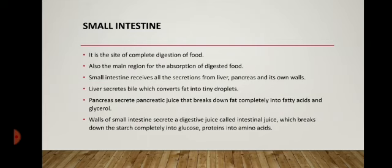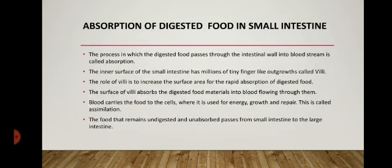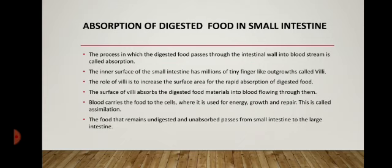In this way, food breaks down completely into very small water-soluble substances like glucose, fatty acids, and amino acids — this is known as digested food. The next important step is absorption, which is the main function of the small intestine. Absorption is the process by which digested food passes through the intestinal wall into the bloodstream. The inner surface of the small intestine has millions of tiny finger-like outgrowths known as villi, which give the inner wall a very large surface area.